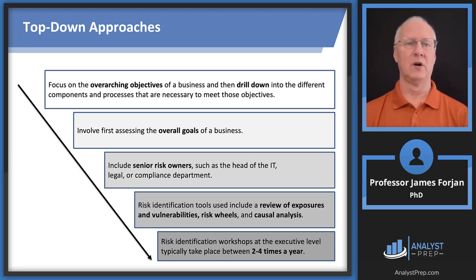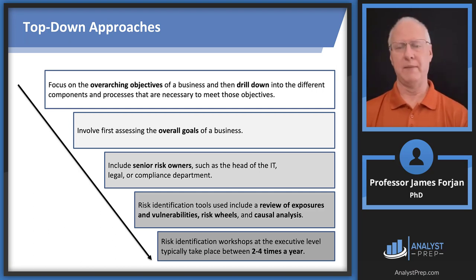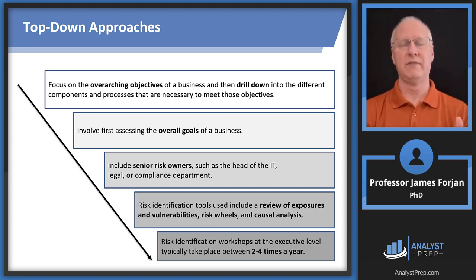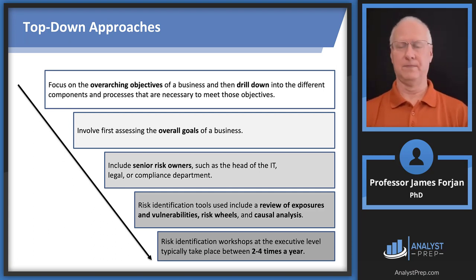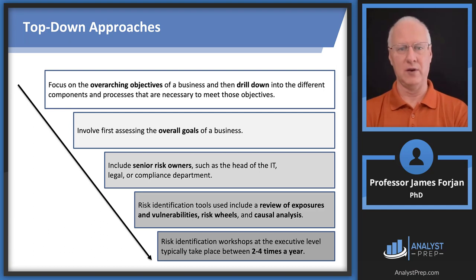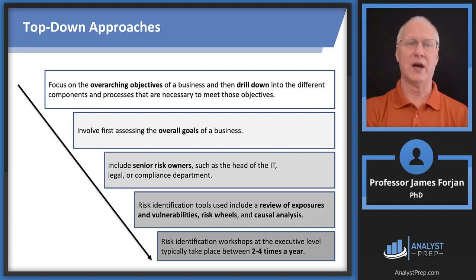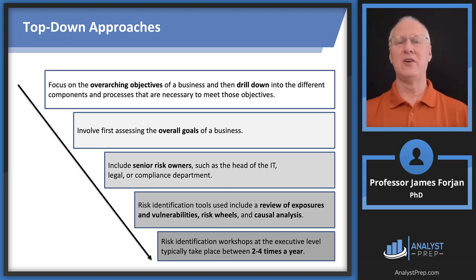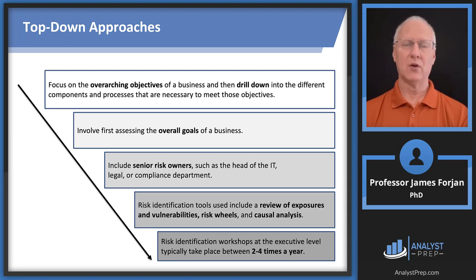Let's start with a couple of slides on the top down approach. Look right in the middle there — that middle gray box, senior risk owners: head of the IT, legal, or compliance department. These individuals have kind of a global perspective. They talk about these objectives, and this reading emphasizes these overarching objectives and then drilling down. Not only do we need to determine what the overall goals of the business are — maximize the value to the owners of the firm — but then it's up to the board of directors and the chief risk officer to say, let's have maybe three goals. You don't want to have 27 goals.